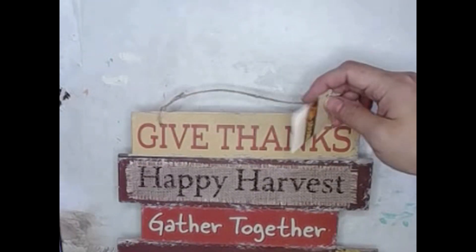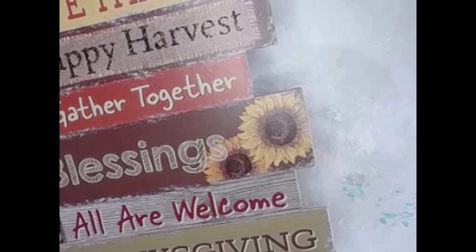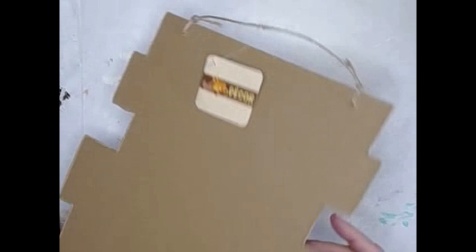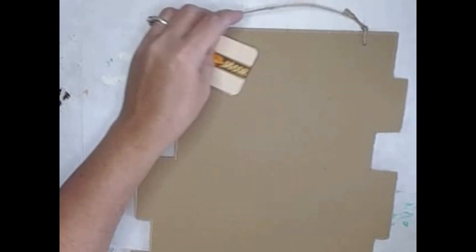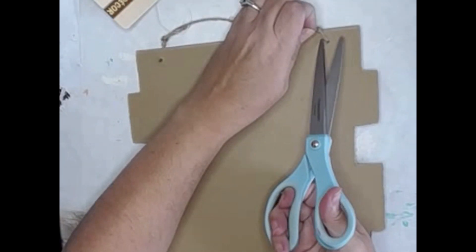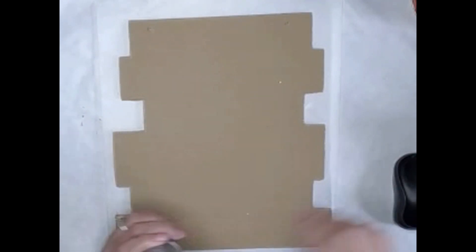Here's the sign that I picked up from Dollar Tree, the Give Thanks Happy Harvest sign. I liked it because of the way the planks were on different levels and different widths. It gave it a lot of character, and I thought it would be perfect for the sign I had in mind. All I did was flip it over. I'm going to paint the back side, and I'm just cutting off the hanger because that is not the hanger I'm going to be using in the end.